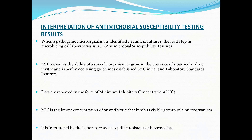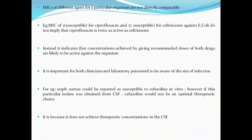Next is interpretation of antimicrobial susceptibility testing. When a pathogenic organism is identified in clinical cultures, the next step is microbiological susceptibility testing. It measures the ability of a specific organism to grow in the presence of a particular drug in vitro and is performed using guidelines established by the Clinical and Laboratory Standards Institute (CLSI). Data are reported in the form of Minimum Inhibitory Concentration (MIC) — the lowest concentration of an antibiotic that inhibits visible growth of a microorganism — interpreted by the laboratory as susceptible, resistant, or intermediate. MICs of different agents for a particular organism are not directly comparable; for example, an MIC of 1 for ciprofloxacin and 2 for ceftriaxone against E. coli does not imply ciprofloxacin is twice as active as ceftriaxone — rather, it indicates that concentrations achieved by recommended doses of both drugs are likely to be active against the organism.